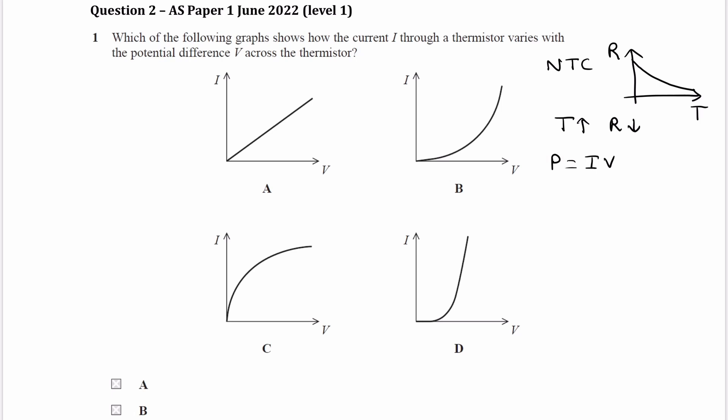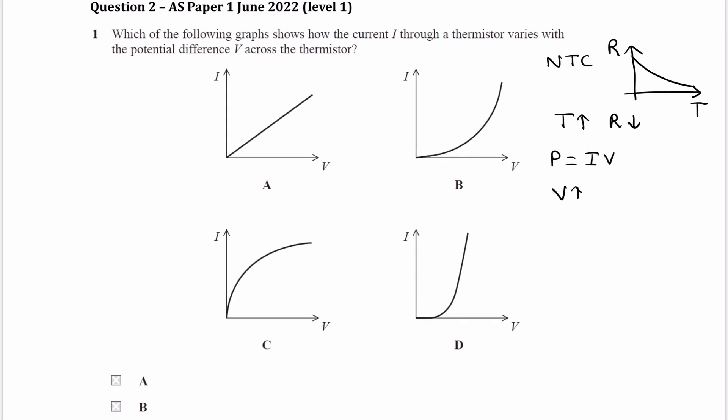If there is more power being dissipated in the thermistor its temperature will increase. So in other words as V goes up that causes the current to go up and that then causes the temperature to go up as well. And if the temperature goes up that means the resistance falls.